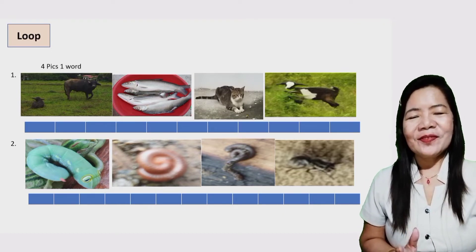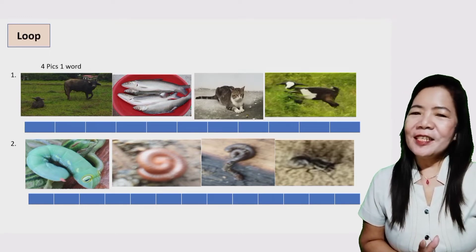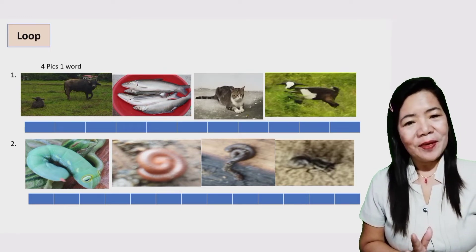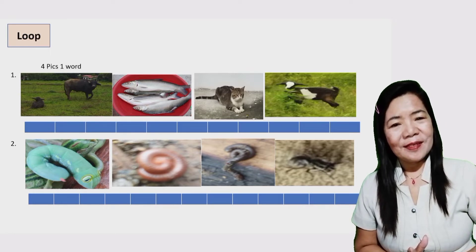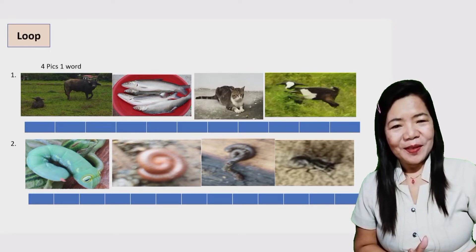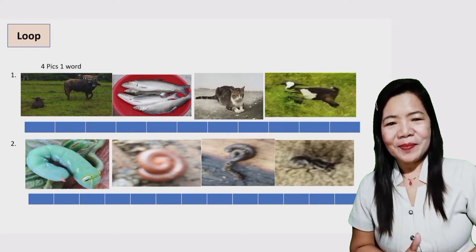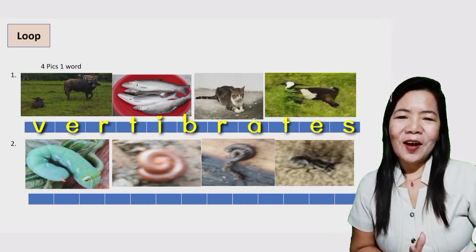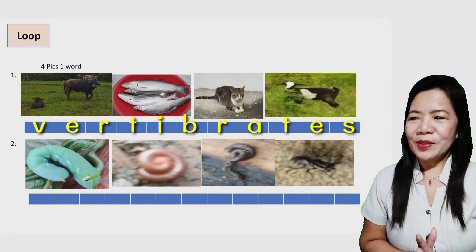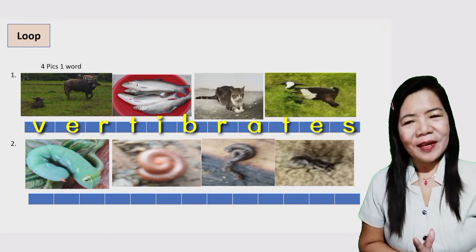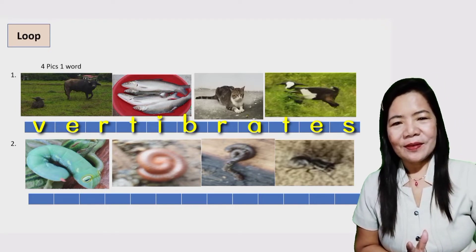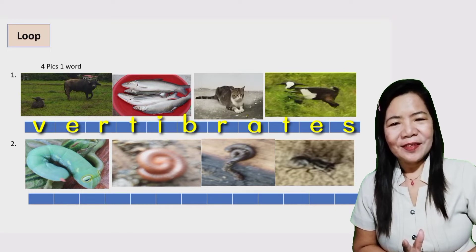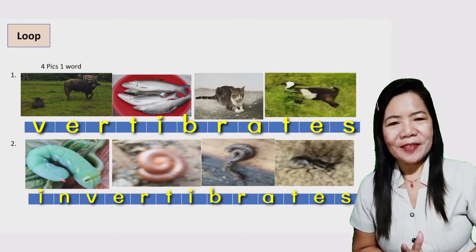Can you give the magic word in number one using the four pictures? Good job! It is vertebrate. How about in number two? What is your answer? Very good! It is invertebrate.